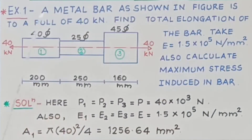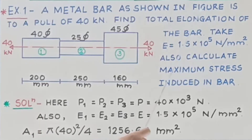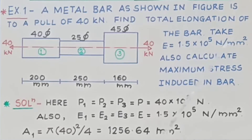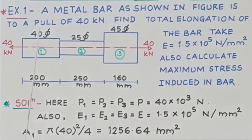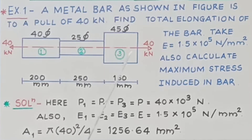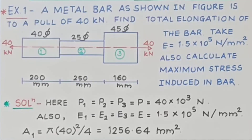Let us take the first problem. A metal bar as shown in the figure is subjected to a pull of 40 kilonewton. Find the total elongation of the bar. Take E = 1.5 × 10⁵ N/mm². Also calculate the maximum stress induced in the bar. Part number 1 has length 200 mm and diameter 40 mm. Part number 2 has length 250 mm and diameter 25 mm. Part number 3 has length 160 mm and diameter 45 mm. The pull applied is 40 kilonewton at the ends, so each part is subjected to a pull of 40 kilonewton.